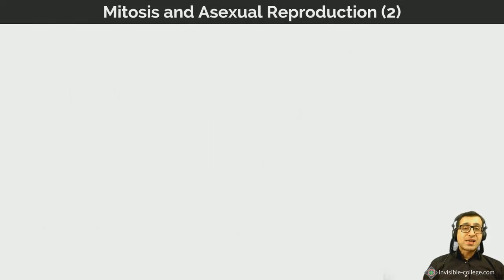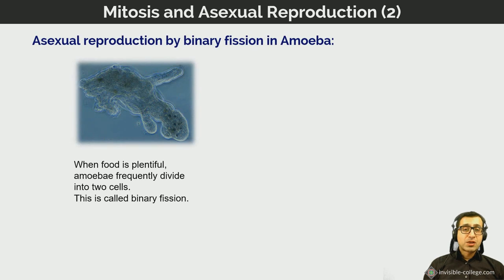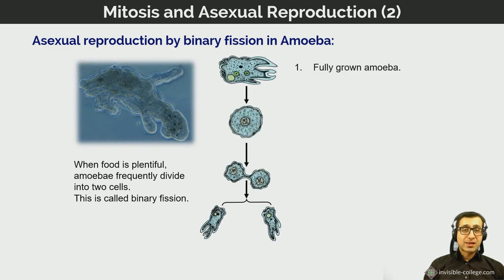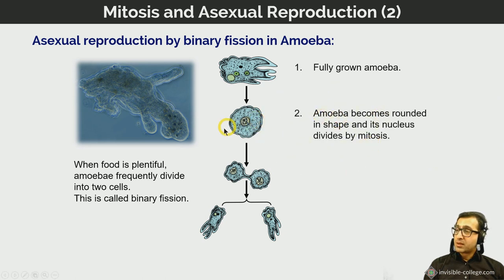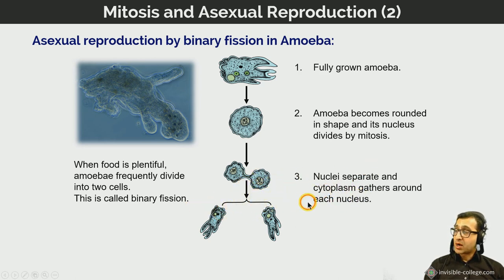Asexual reproduction by mitosis in amoeba occurs like this: a fully grown amoeba becomes rounded in shape, its nucleus divides by mitosis, the nuclei separate, the cytoplasm gathers around each nucleus, and then the cytoplasm separates completely, forming two daughter amoeba.